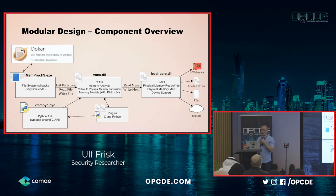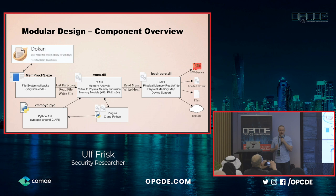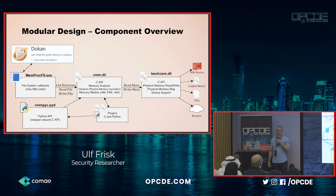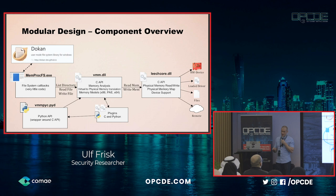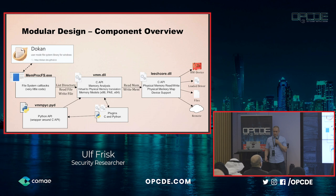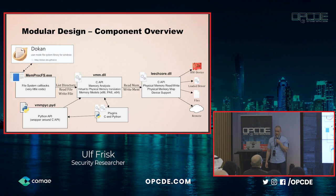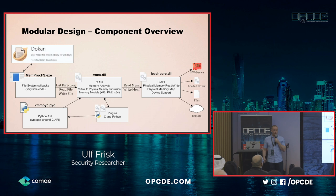I used a really awesome third-party product called Dokan, which is a user-mode file system — it takes care of all the hard parts so I don't have to. It has a kernel driver for the file system parts; all I need to do is implement some really simple user-mode hooks in the Memory Process File System executable. This simple callback is pretty much just a thin wrapper around the main analysis library, where I do all the memory analysis. It's a really big C API that takes care of all the memory analysis steps, including translation between physical memory and virtual memory. I also have a plugin manager for Python and C plugins, and if I use a Python plugin, I call back into the memory analysis library via the Python API.